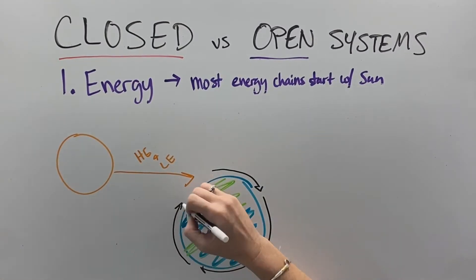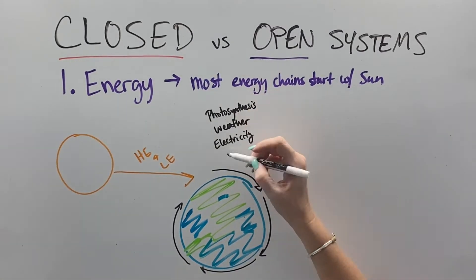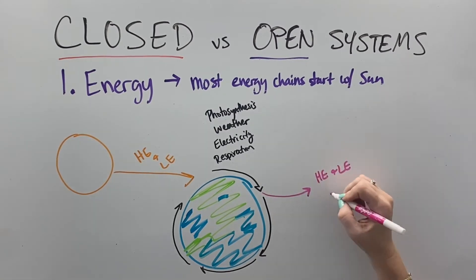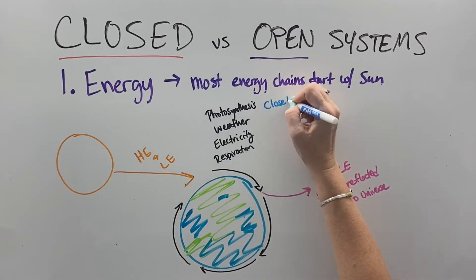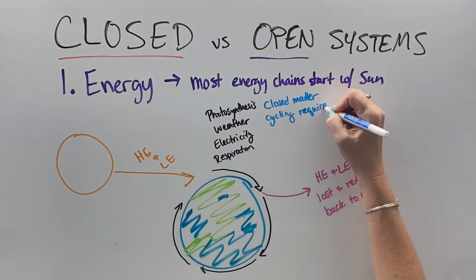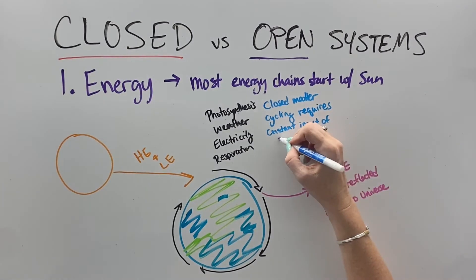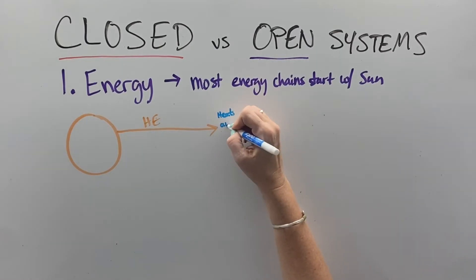Energy on the other hand are open systems. So we get heat and light that come to us from the sun and rotate through our systems. We get photosynthesis, weather, electricity, respiration, all kinds of great systems. And then some heat and light is reflected and lost back out into the universe. So these closed matter systems cycling require the constant input of energy from the sun. We have to have an outside energy source.